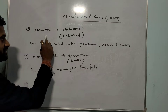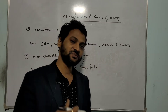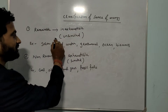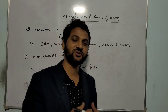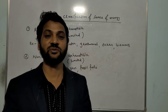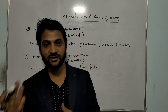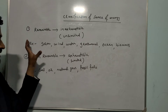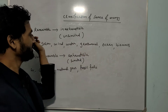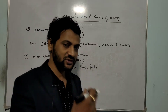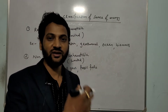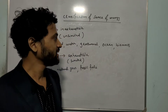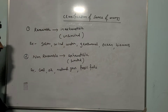Renewable source of energy is inexhaustible — that is, plenty available. In nature, the availability is unlimited, like solar energy, the energy you get from the sun, wind energy, tidal energy, geothermal energy, and biomass energy. These are the sources that come under renewable source of energy. We can use that energy again and again within a short period of time.